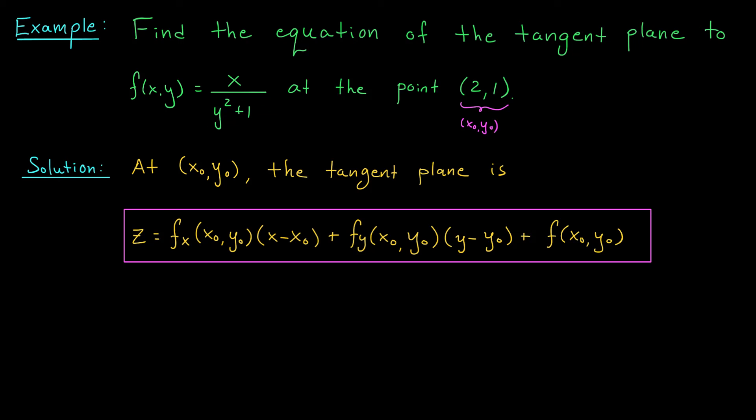As for the partial derivatives, we can find these using the equation of our function. To find fx, for example, we would differentiate this expression with respect to x, treating y like a constant. So in this case, I have x divided by what I'm going to consider to be a constant. The derivative is going to be 1 divided by y squared plus 1.